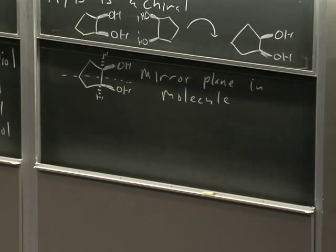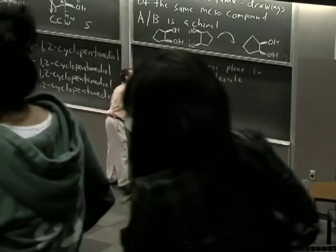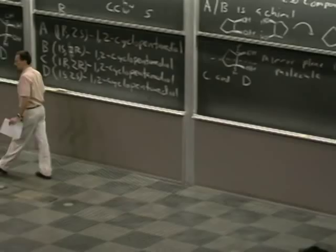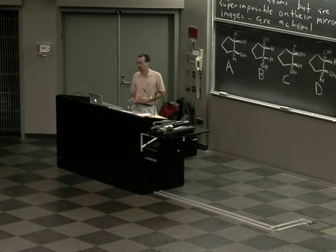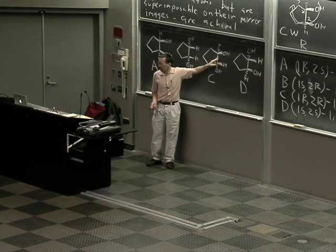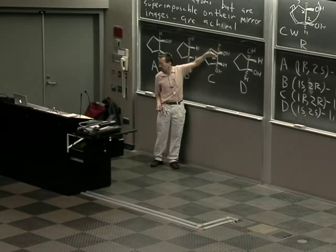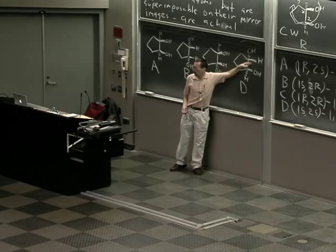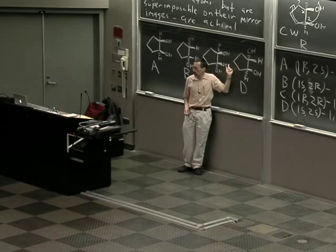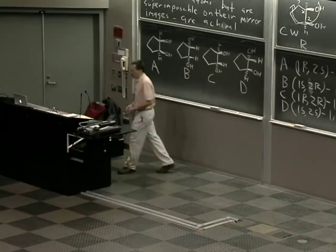So A and B are the same. What about C and D? C and D are also mirror images of each other. I can reflect through the plane of the blackboard — that throws this OH out and the hydrogen back, and throws this OH back and the hydrogen out. Reflecting through the plane of the blackboard turns C into D.